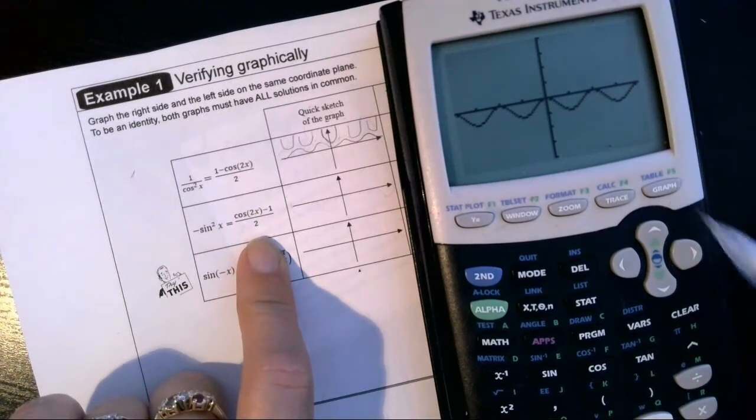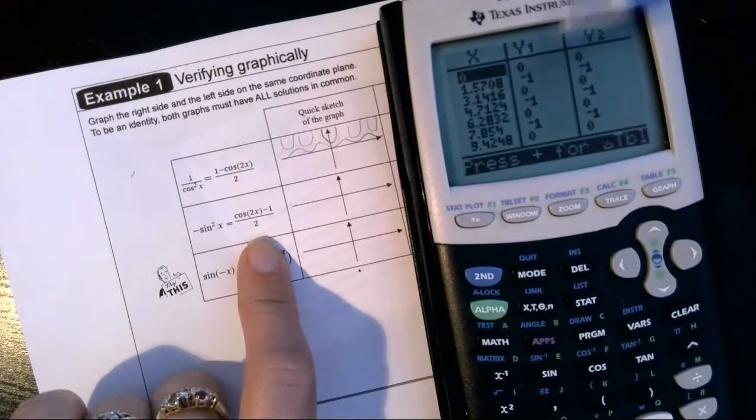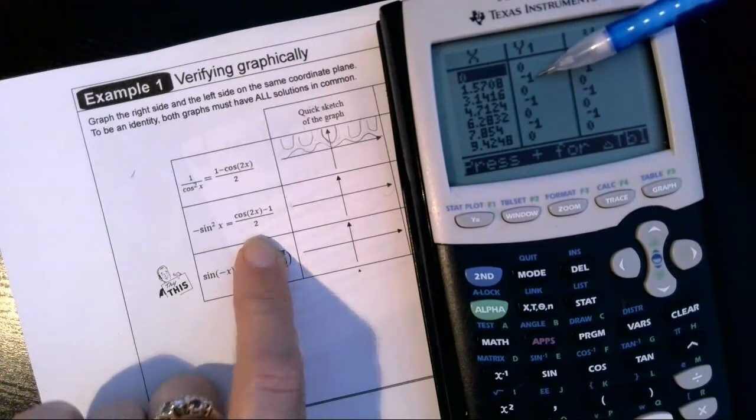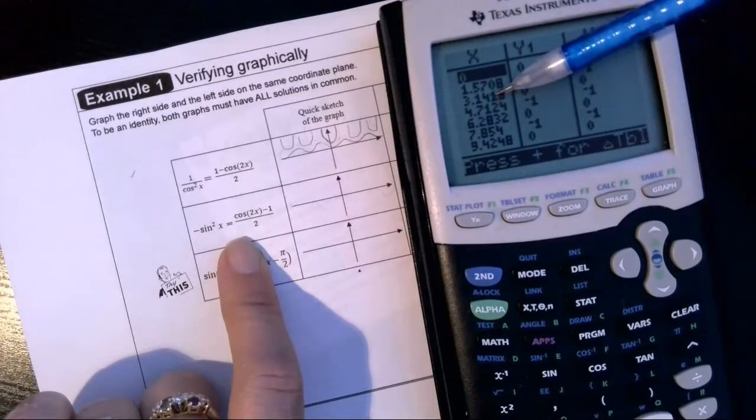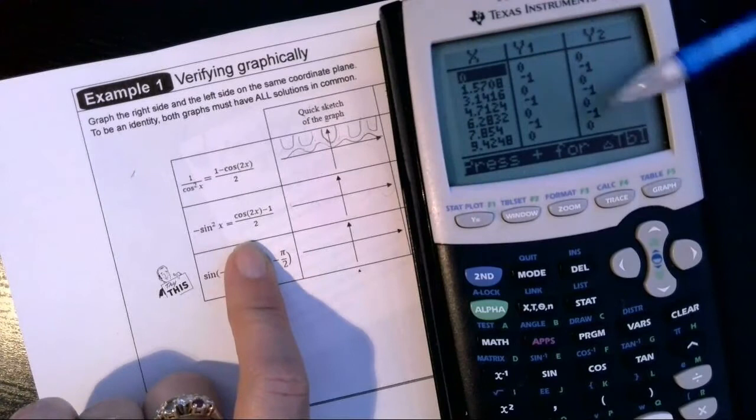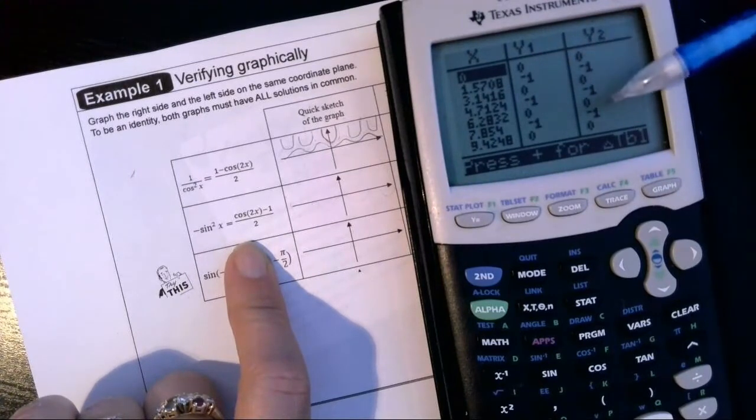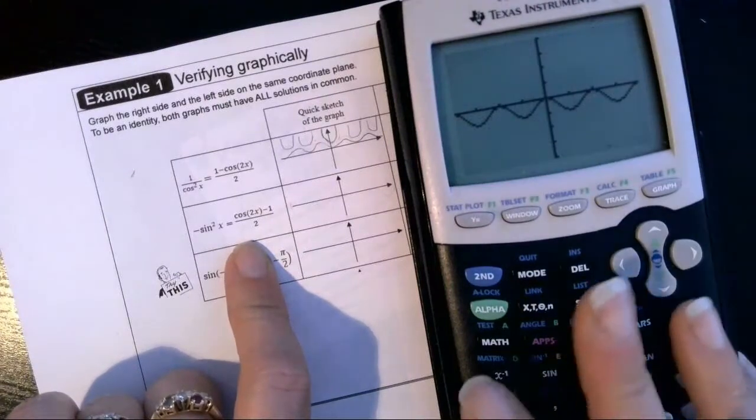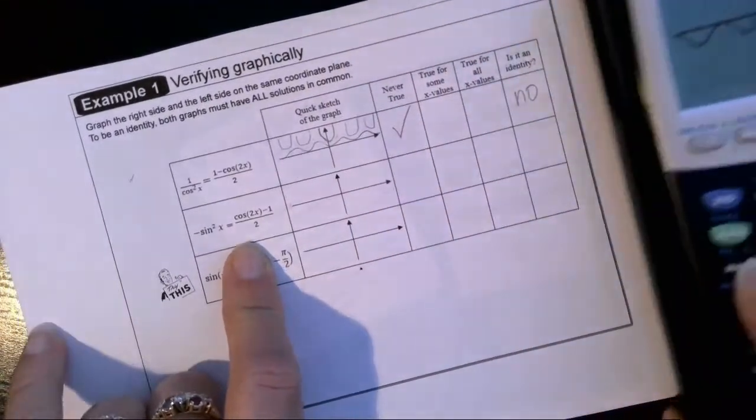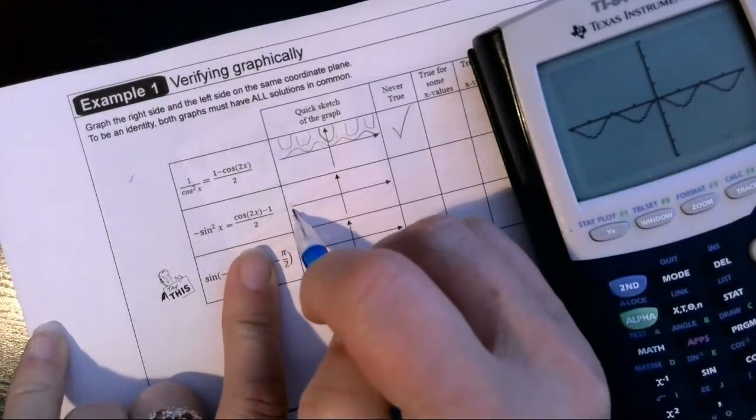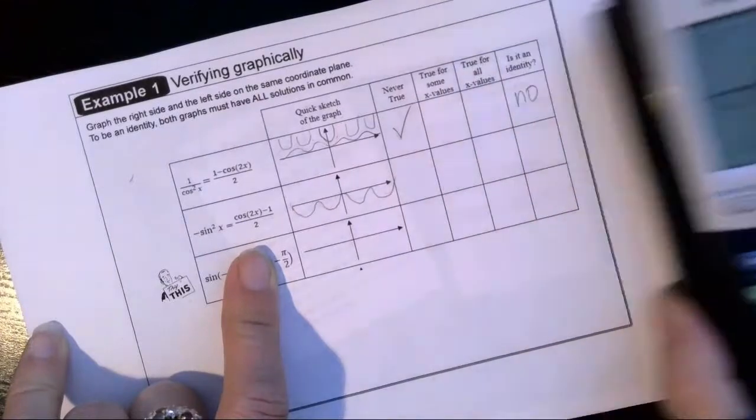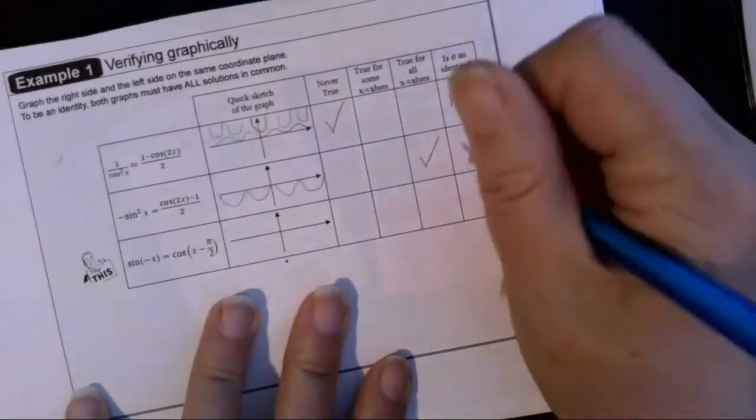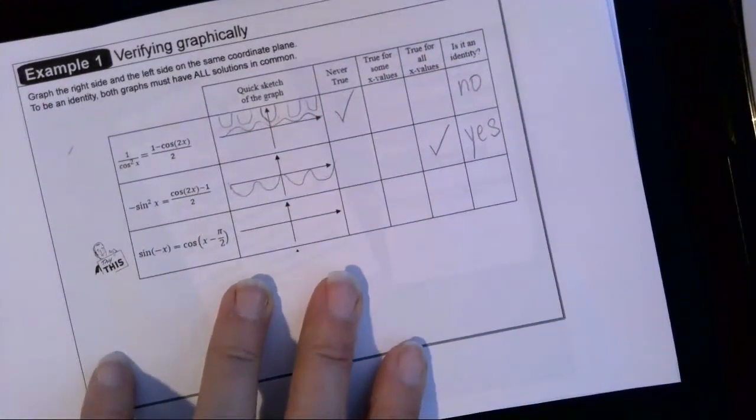We're going to look at the table and see if they have points in common. So as we look here at pi over 2, the x is pi over 2, the y1, that's our left-hand side, is equal to negative 1, the y2 also negative 1. So they coincide at those points. At pi, same thing, they coincide, they're both at 0. And as we look down the table, that pattern is holding true throughout. So that tells us that they have all of their points in common, these graphs are coinciding. So we can go ahead and make our rough sketch. And then we can say that this is true for all x values, which means that yes, it is an identity.